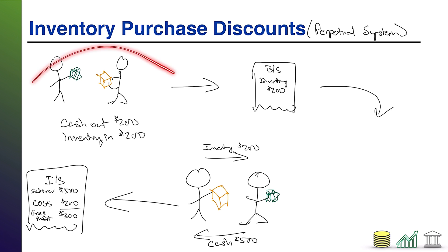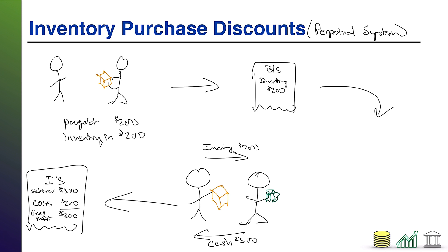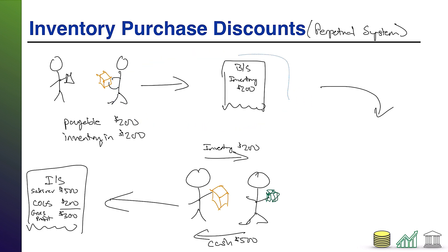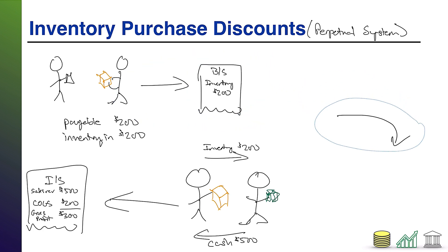Same scenario — we bought some goods from a supplier, but now instead of paying cash outright, we are going to have a payable. Think of it like charging our supplier credit card — we're saying we'll pay later. We're still getting $200 worth of inventory which goes on our balance sheet.